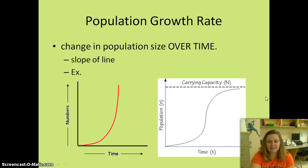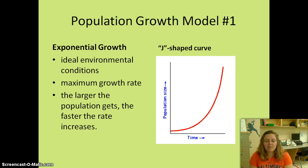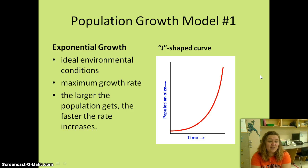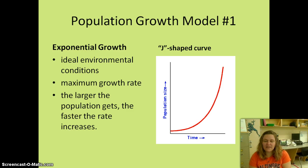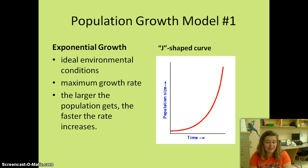We've got two different models. Growth model one shows exponential growth — an exponential curve looks like a J, so we call it a J-shaped curve. It has ideal environmental conditions, a maximum growth rate, and the larger the population gets, the faster the rate increases. Think about it this way: if there are a lot of humans on Earth, there are a lot of humans that can populate the Earth, so they keep having babies and more and more babies are born each year.